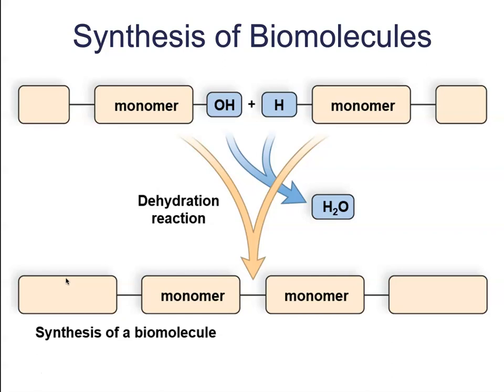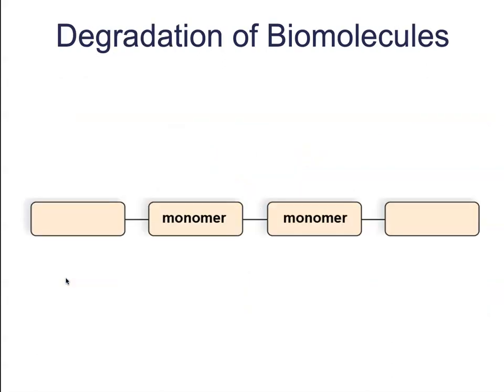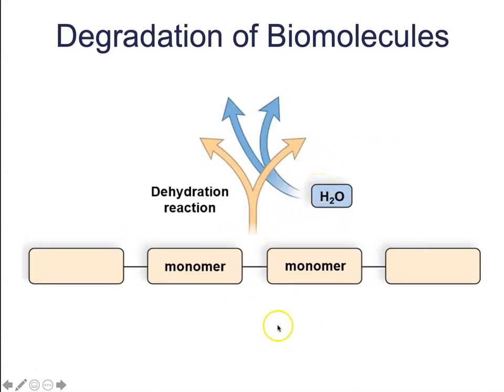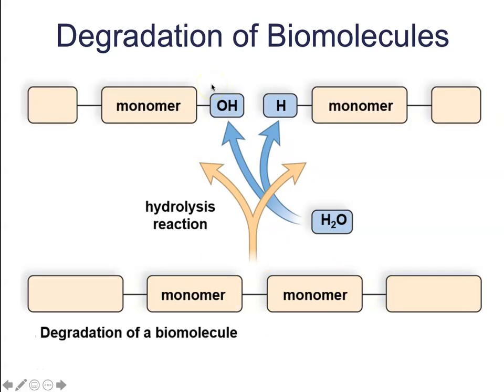If we want to break this down through a degradation reaction, we just do the opposite. We start with one great big long chain and shoot water molecules at it. When we add those water molecules, we break it apart — we add a hydroxyl group to one side and a hydrogen group to the other. Where we once had one long chain, we now have two smaller chains. That's how we break these covalent bonds — by adding water.